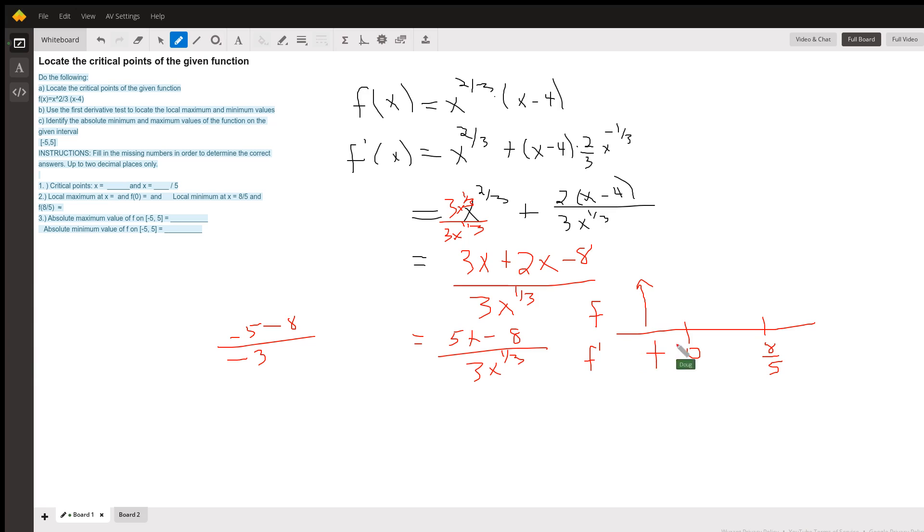Pick a number between zero and eight-fifths, like the number 1. We get negative over positive is negative, decreasing. And a number to the right of eight-fifths, like 2, we get positive over positive is positive, increasing.